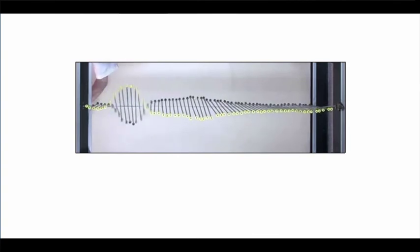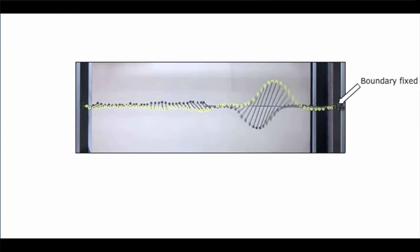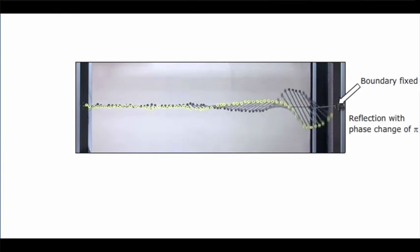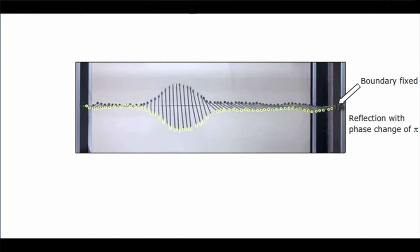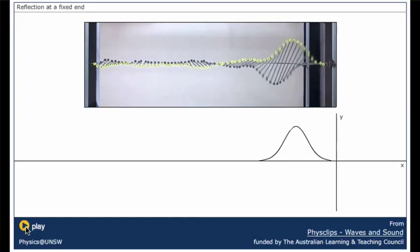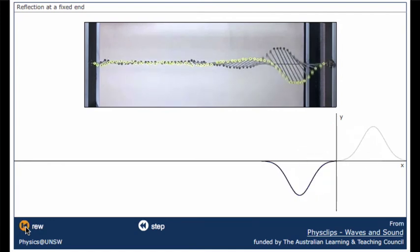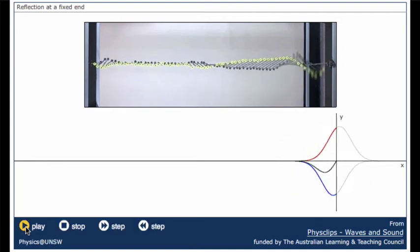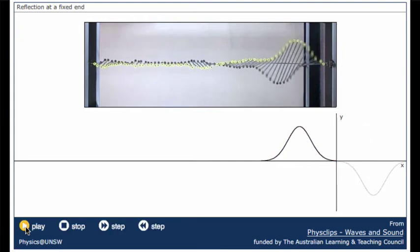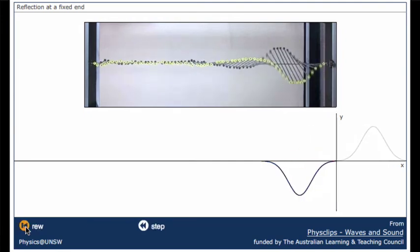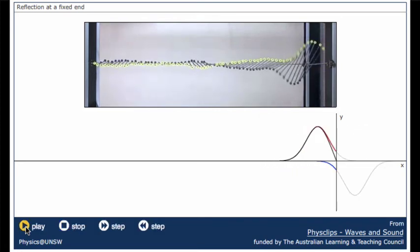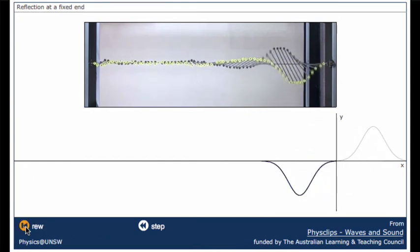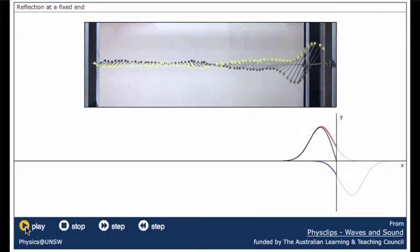So let's start off with the end of the wave machine fixed. We send a pulse along, it's reflected, and the reflection comes back inverted. If we see the real pulse travelling from left to right, we can imagine an inverted pulse coming from the right-hand side, and what we see is the sum of the two pulses. The sum of the positive pulse and the negative pulse providing zero displacement at the fixed end of the machine.